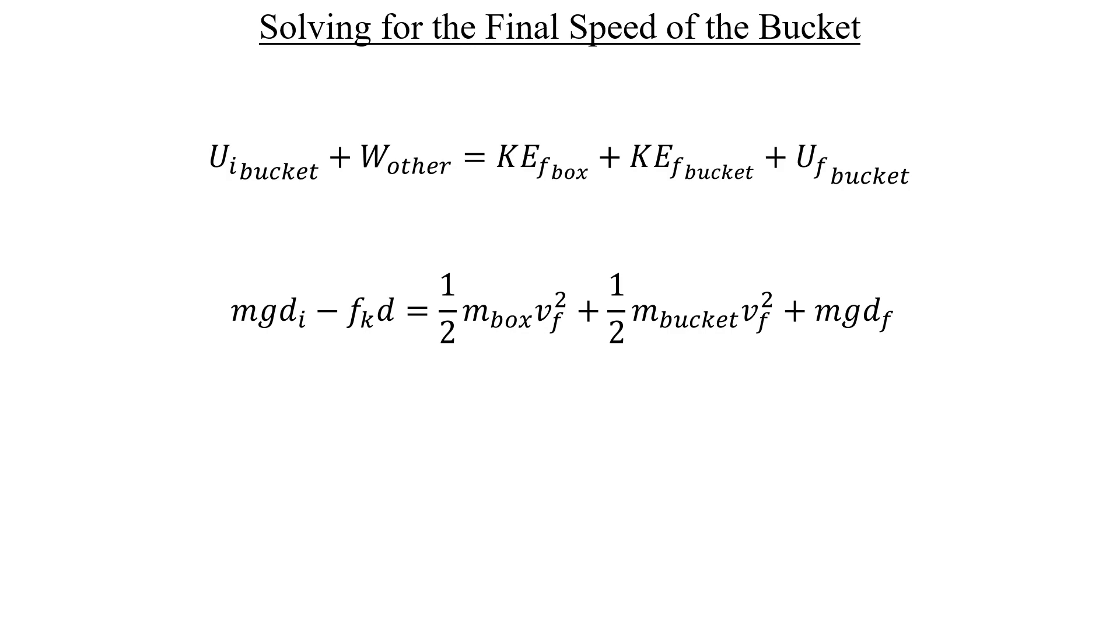Now I mentioned before that there was one more quantity that we could eliminate. We only care about the speed of the bucket after it falls two meters. That means we can set the initial height distance, this one here, to that two meter value and we can set the final height distance, this one here, equal to zero, which will get rid of the whole term. That will leave us with this expression as a result.